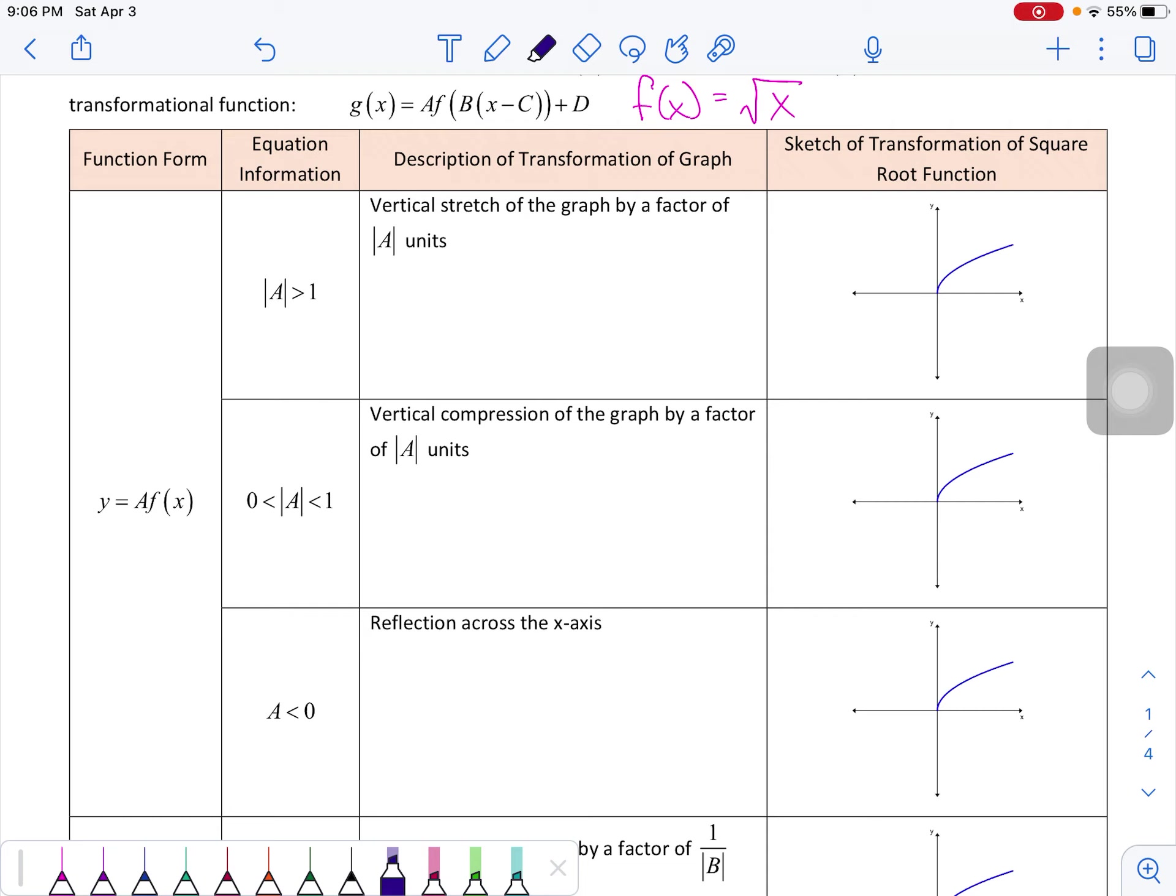So the first three we're going to talk about here are all changes to a. So a is when we've got something being multiplied times the entire function. So if we say that a is greater than 1, that might be an example here. Let's say we did g of x is equal to 5 times the square root of x. This is a vertical stretch.